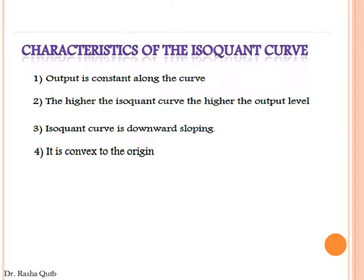The isoquant curve shows different combinations of labor and capital used to produce the same level of output — it is a locus of points along which the total difference in output equals zero. Main characteristics: (1) output is constant along the curve; (2) the higher the isoquant curve, the higher the level of output; (3) the curve is downward sloping because to keep output constant, more of one input requires less of the other; (4) it is convex to the origin due to the diminishing marginal rate of technical substitution — as more labor is used, fewer capital units are given up.